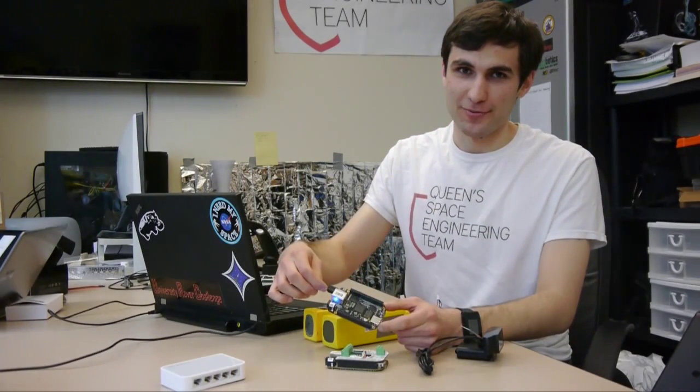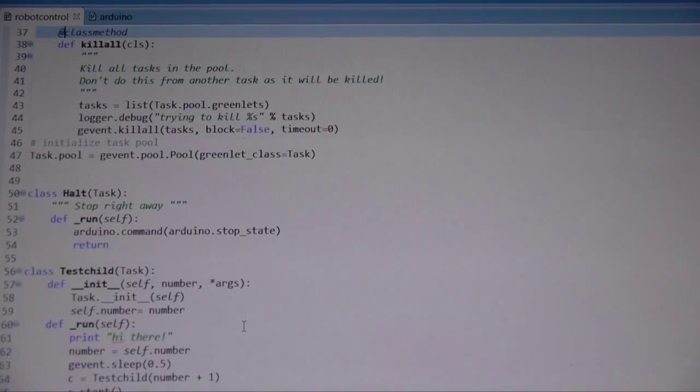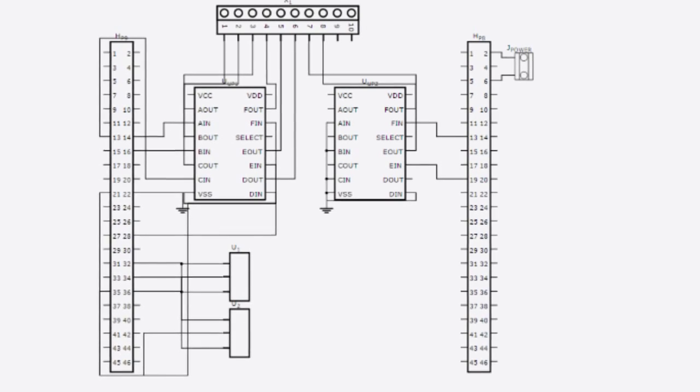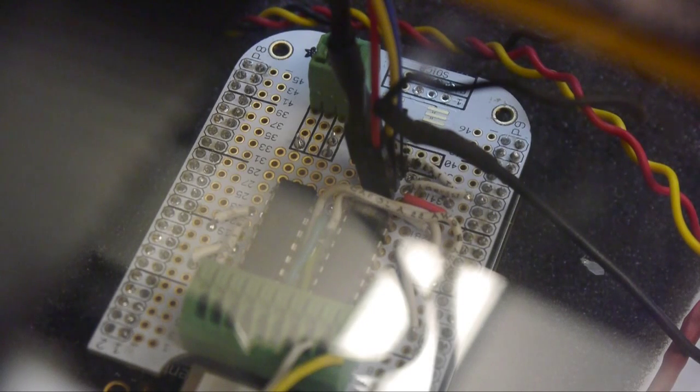Onboard processing is handled by two BeagleBone Blacks. Compared to using a separate computer or microcontroller, this has removed dependencies from our code and made it more modular. These custom-built capes provide all the logic levels and outputs that we need. At the same time, the built-in real-time units still let us have fast control, including use of motor encoders.